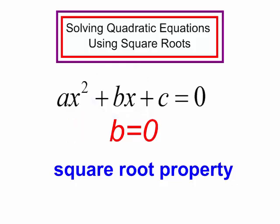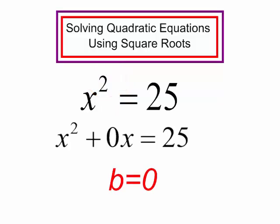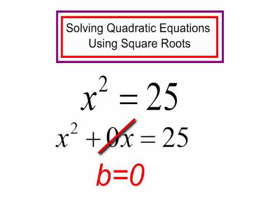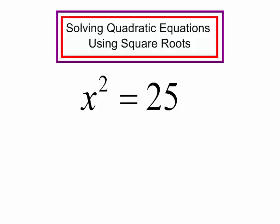Let's look at a problem: x squared equals 25. I see that this is a quadratic equation — I have an x squared, but I do not have an x to the first. So b must equal 0, and 0 times x is just 0, so there is no need to write the x to the first term. In this situation, I can solve this quadratic equation using square roots.